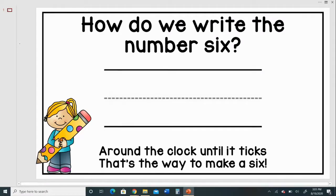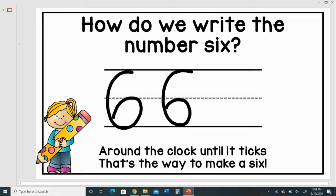How do we write the number 6? Around the clock until it ticks. That's the way to make a 6. Let's try it again. Around the clock until it ticks. That's the way to make a 6. Let's see if you can say it this time. Nice job.